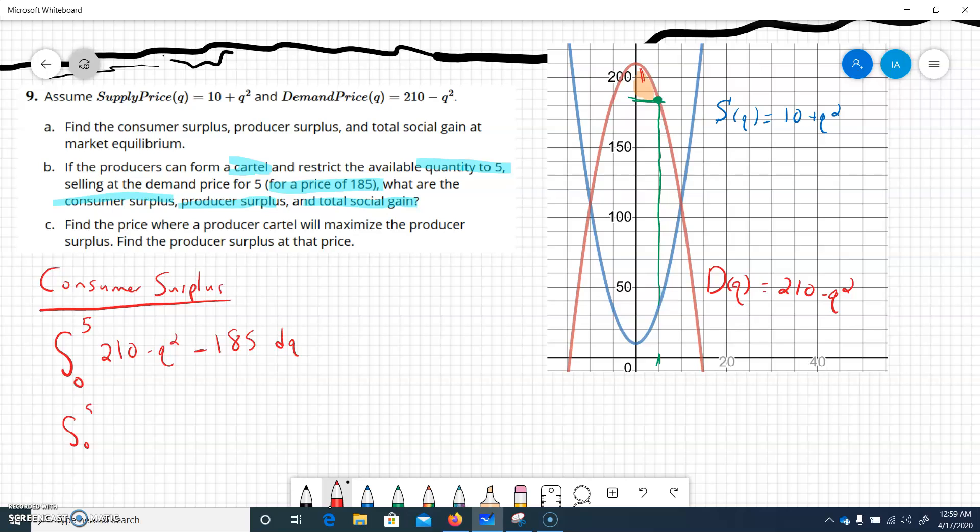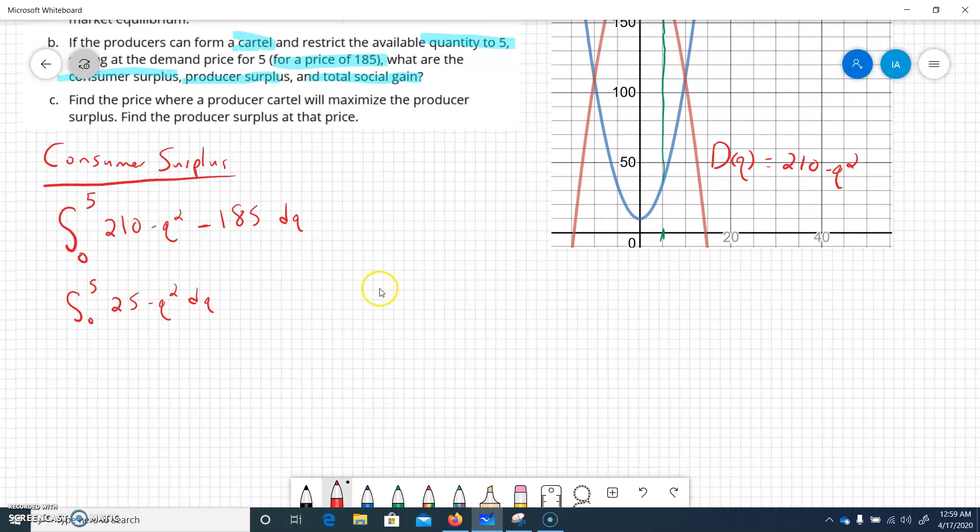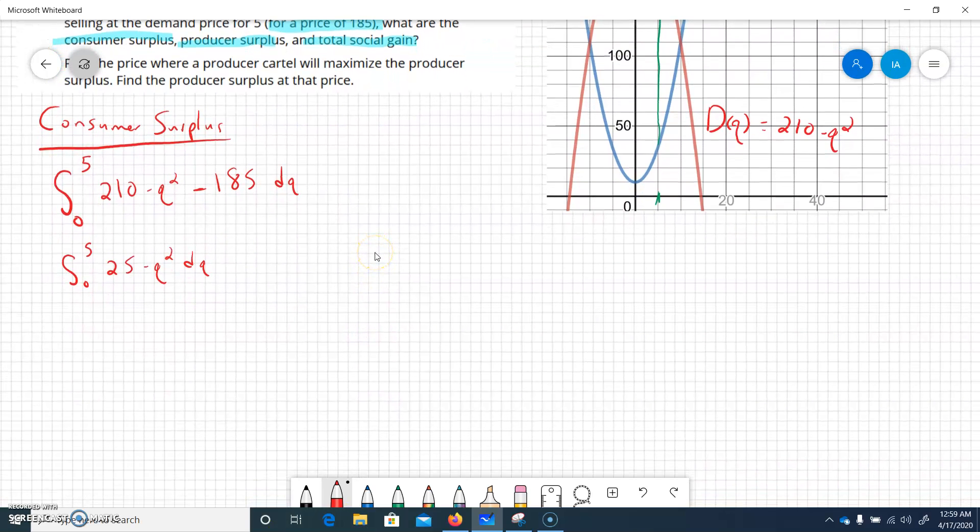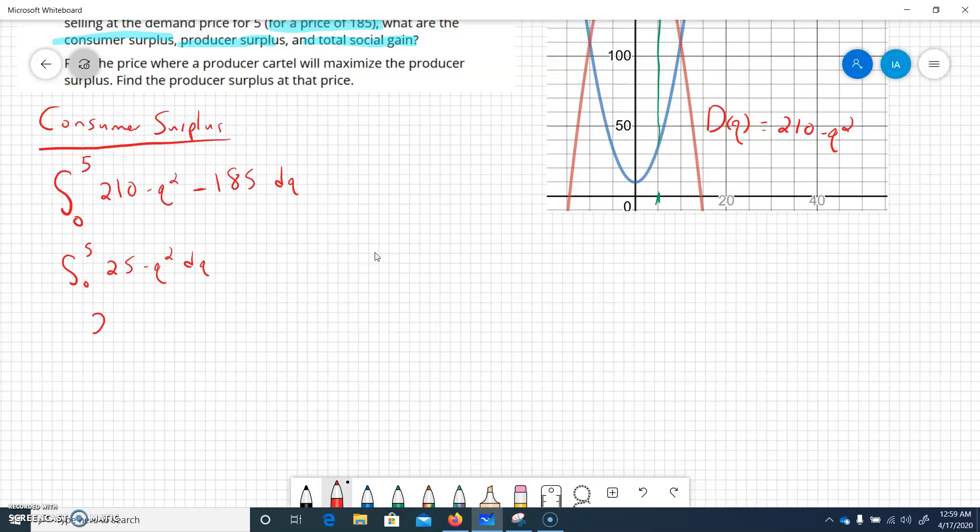Some people were willing to spend $200, some people were only willing to spend $185, so we're getting the total in there above that price that was set. Let's see here, we'll clean this up a little bit. It's 25 minus q squared.